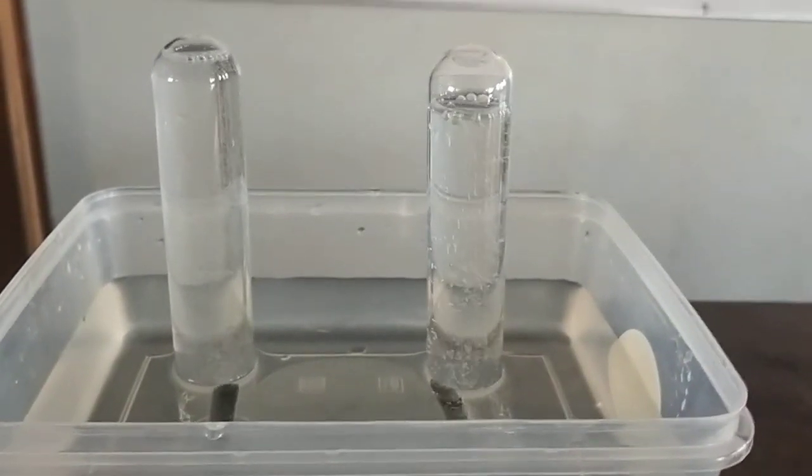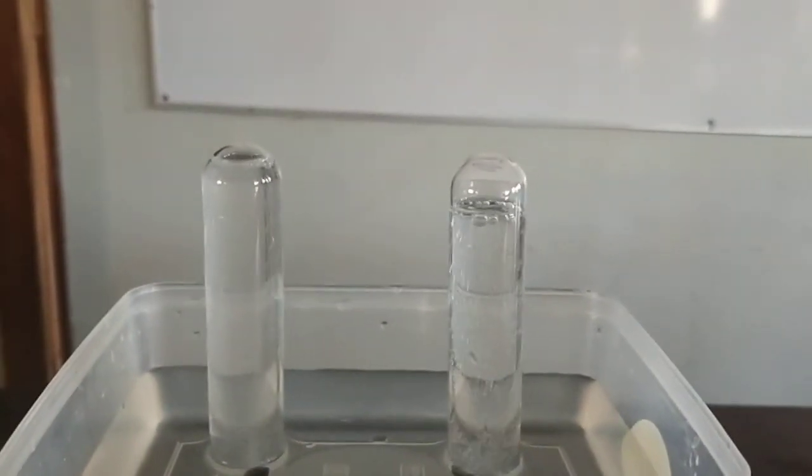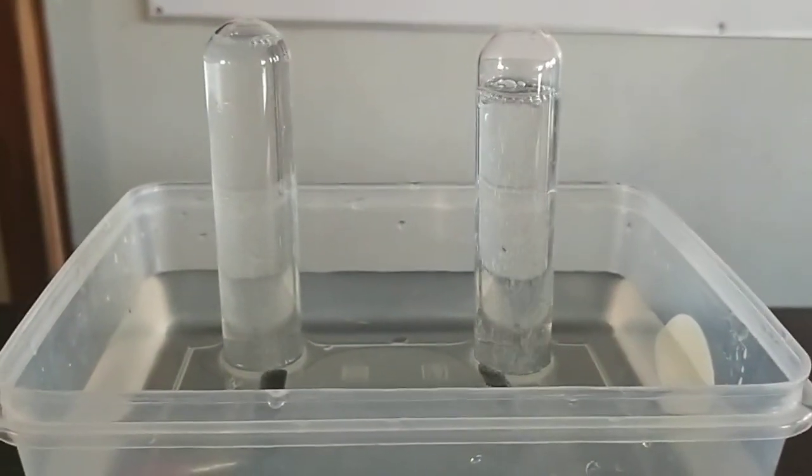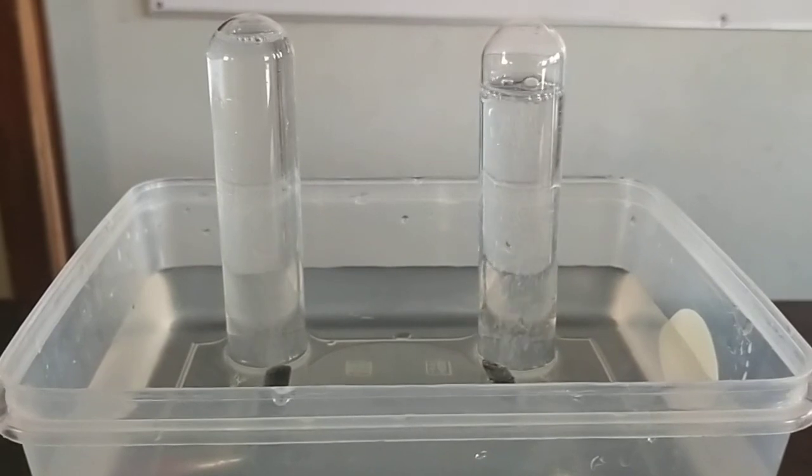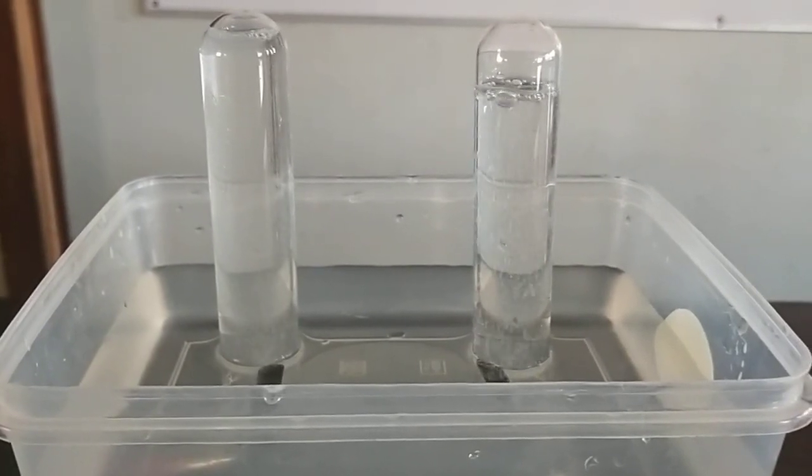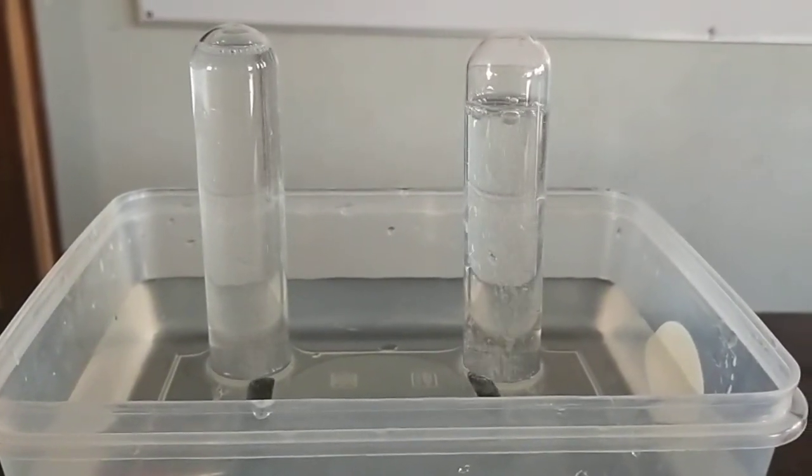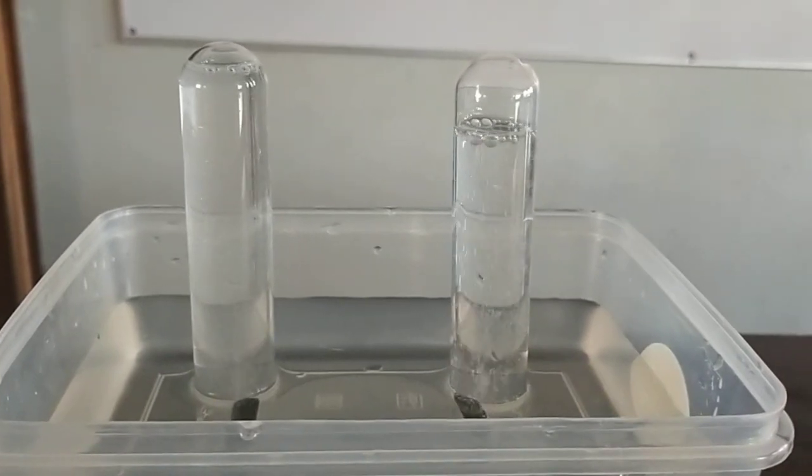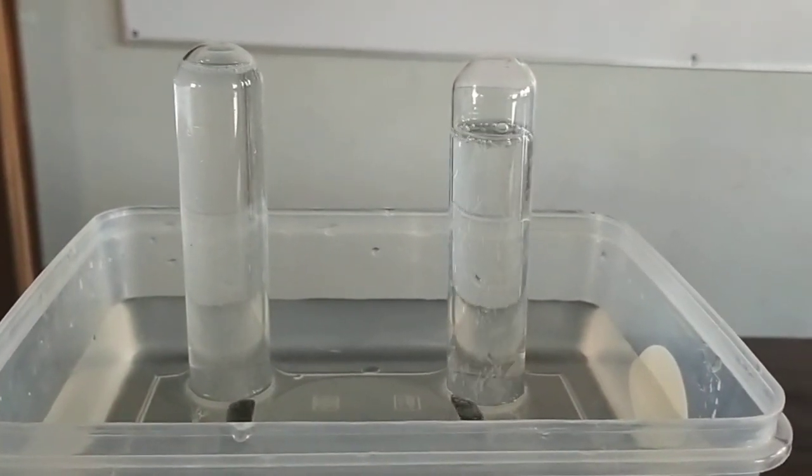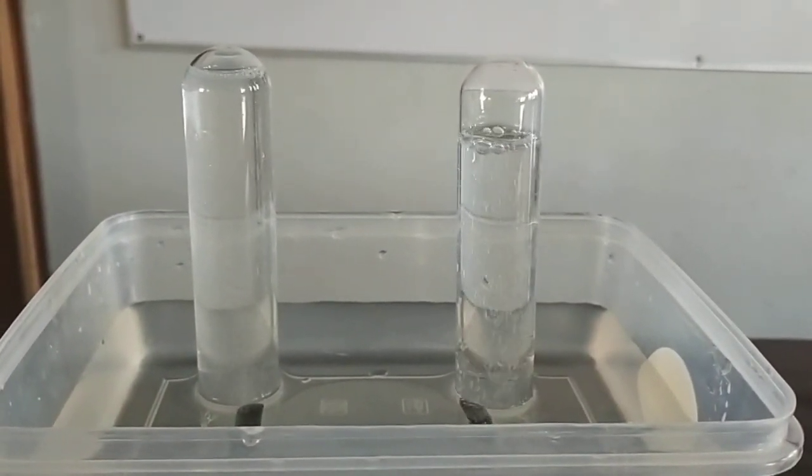As the electrolysis continues, it is apparent that the volume of gas collecting on the electrode at the right hand side, which is the cathode, is approximately twice the volume of gas collecting on the electrode on the left hand side, which is the anode.